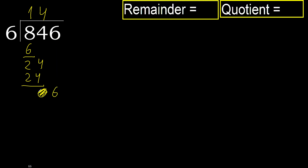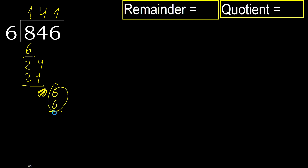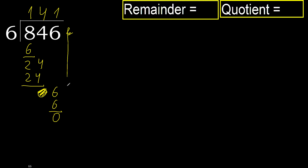Bring down: 6. 6 multiplied by 1 is 6. Is not greater. Subtract. Next. That is not a number, therefore finish it.